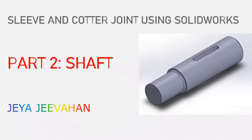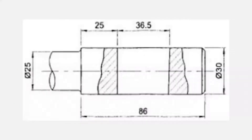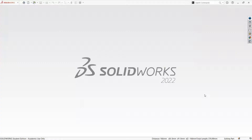Hi, in this video I am going to explain how to model the shaft, which is the second part of the sleeve and quarter joint using SOLIDWORKS. This slide shows the dimensions of the shaft. Let us begin the modeling of the shaft.